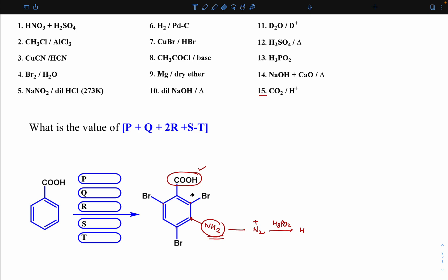First do nitration because carboxylic acid is a meta-directing group. Suppose this is benzoic acid, if I do nitration first, HNO3 H2SO4, at meta position I'll get NO2 because COOH is a meta-directing group.